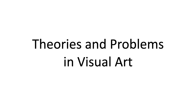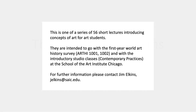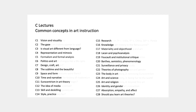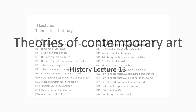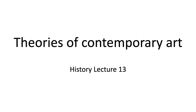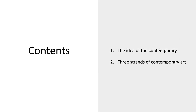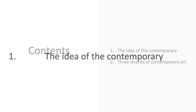Welcome to Theories and Problems in Visual Art. This is Lecture H13, History Lecture 13 on Theories of Contemporary Art. I'm going to talk first about the idea of the contemporary and a couple of other words that are used along with it, like contemporaneity — a notoriously hard word to pronounce and spell — and then I'm going to talk about a theory that contemporary art actually divides into three strands or modes.